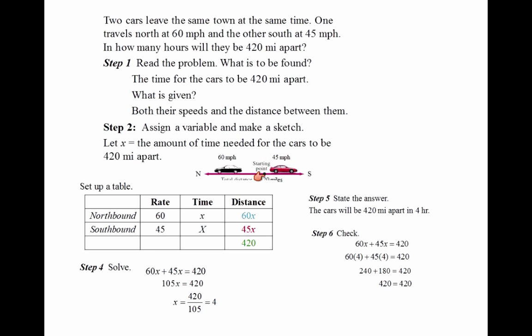It's a good idea to draw something to illustrate the situation. Here, one car going south, 45 miles per hour. The other one going north, 60 miles per hour. They are 420 miles apart. We can also set up a chart like this: the rate, time, and distance. We can record the rate with the 60 and 45 for each of the cars. The time is the same, x. And the distance would be rate times time. The distance going north would be 60x, south would be 45x.